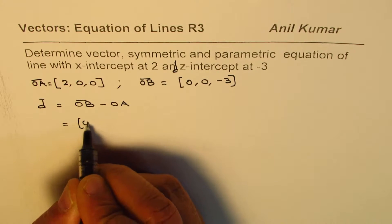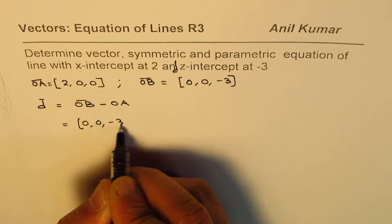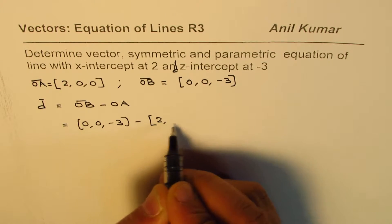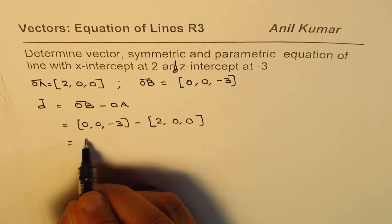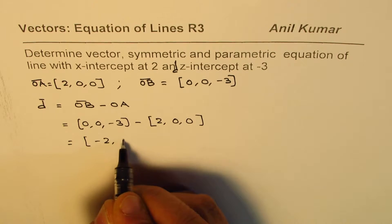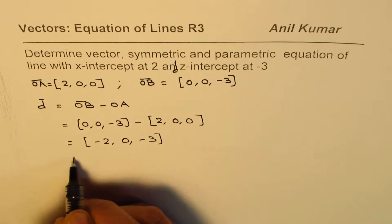So, OB is (0, 0, -3), minus OA, which is (2, 0, 0). That gives us (-2, 0, -3). Now,